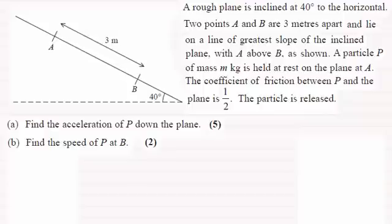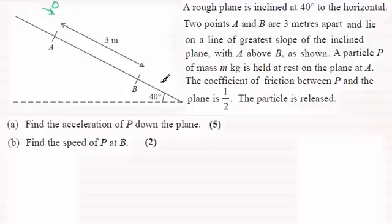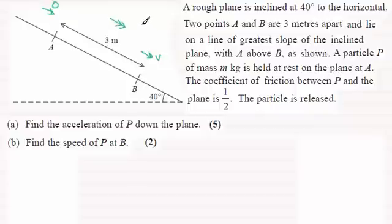Okay, welcome back. So let's see how we would do this. First of all, the particle starts at A and is released from rest, so I'll mark in an arrow to show that, with zero there. It then gains speed as it travels the distance from A to B — three meters — and at B it's going at speed v, which we need to find in part b. As it changes speed it must be accelerating, so we'll mark that as a, in meters per second squared, to find in part a.